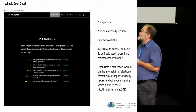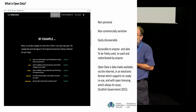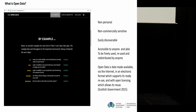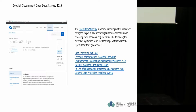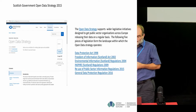Linked data is linked to other datasets. It's non-personal data, non-commercially sensitive, easily discoverable, accessible to anyone, and able to be freely reused and distributed by anyone. It's made available via the internet in an electronic format which supports ready use with open licensing. That's the Scottish Government definition from 2015, when they published their open data strategy, which supports wider legislative initiatives designed to make public sector information accessible for reuse to help grow the digital economy.